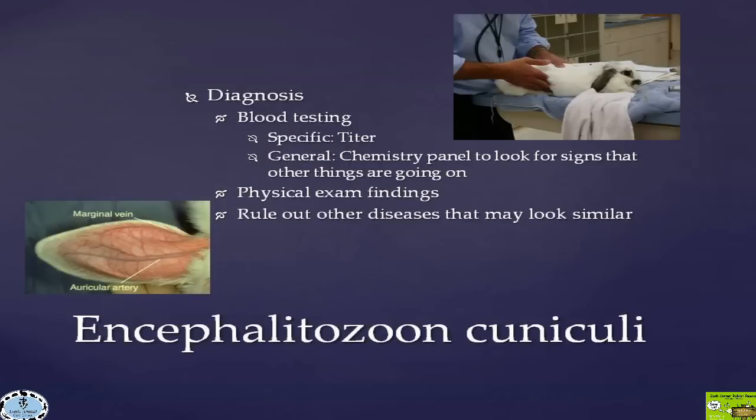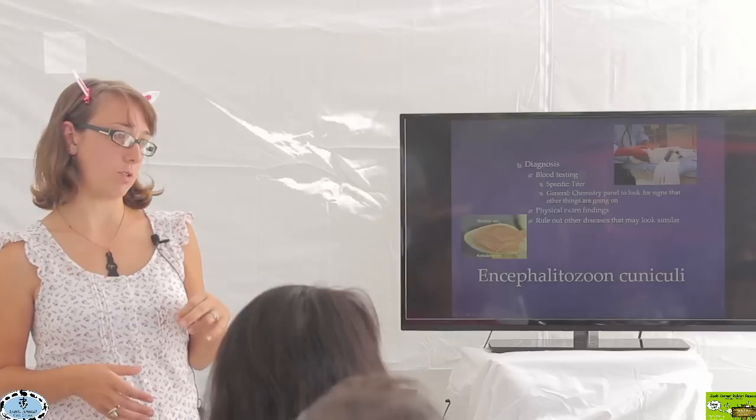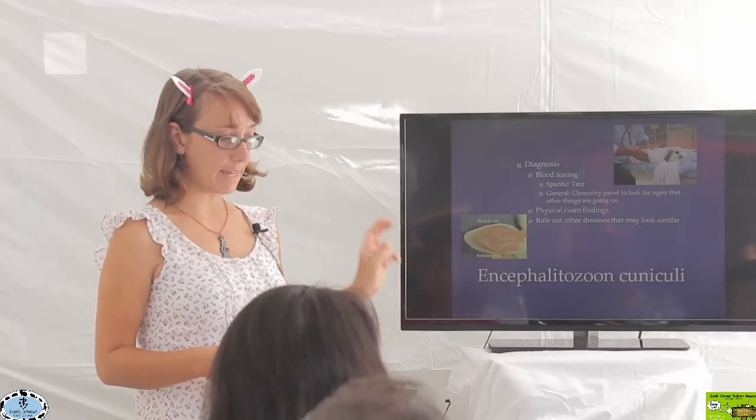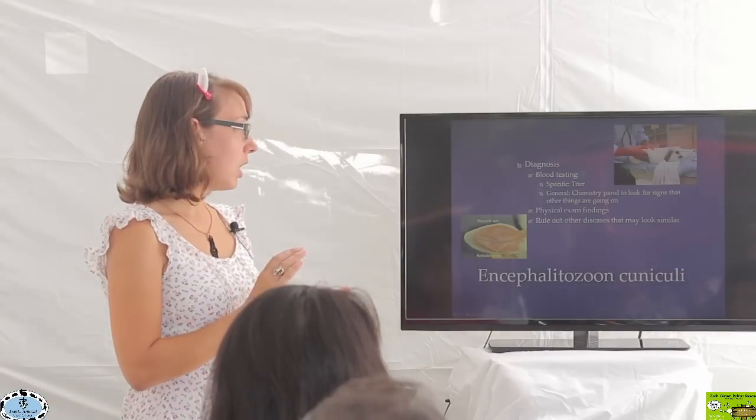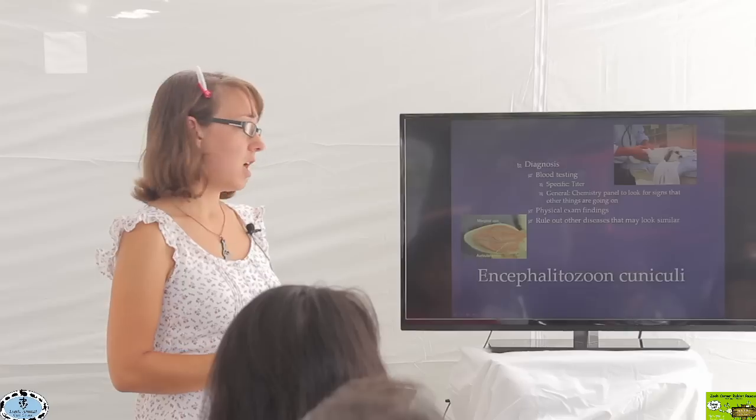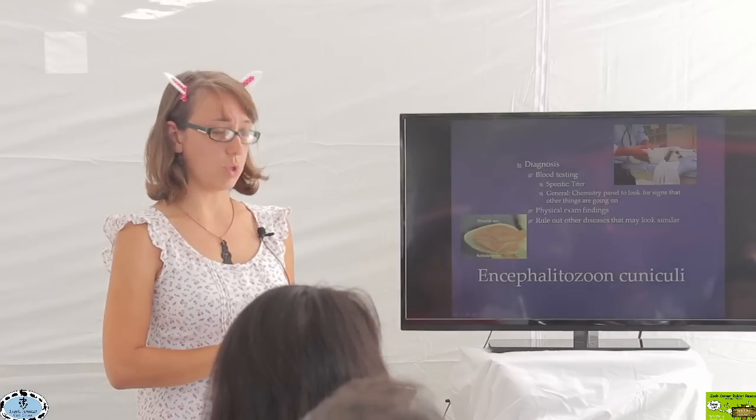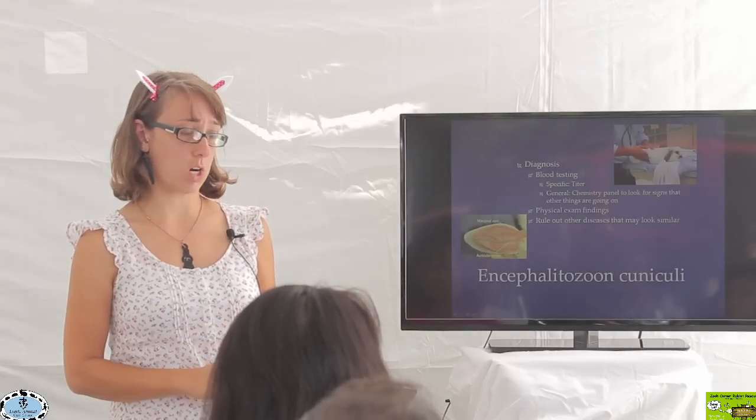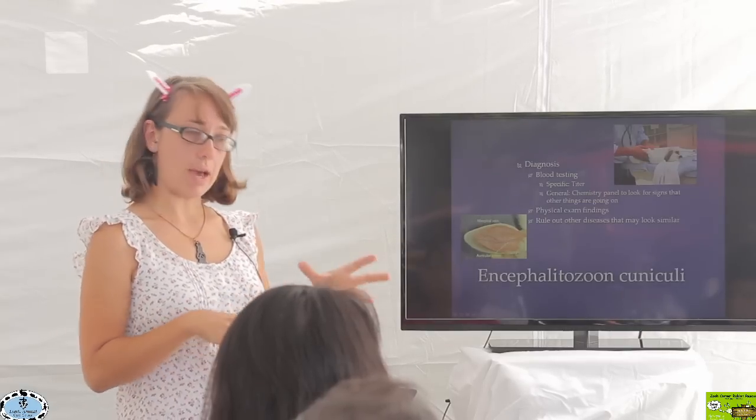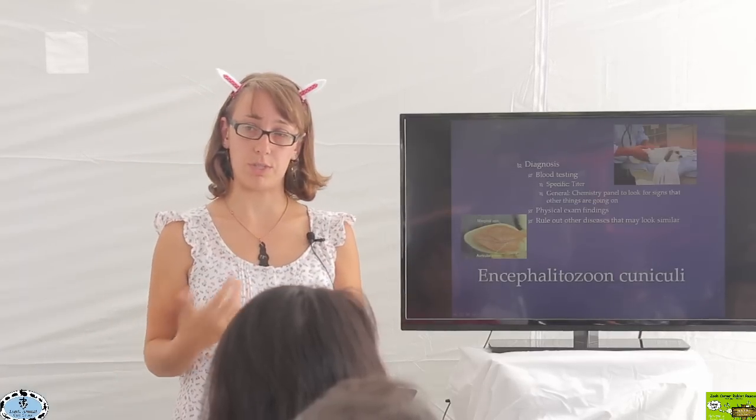We may do blood testing. Blood testing is probably the most helpful diagnostic that we have right now. The old blood tests were not that great. The tests have changed in the last few years to be a little more helpful than before. That's the best test we have. We may be suspicious based on physical exam findings, but we need to rule out other diseases. We may ask for general blood work or do x-rays, depending on what signs that particular rabbit is presenting with.